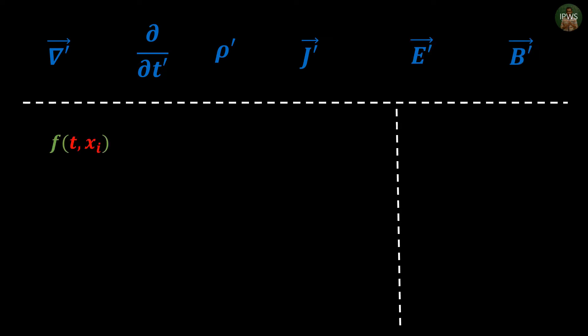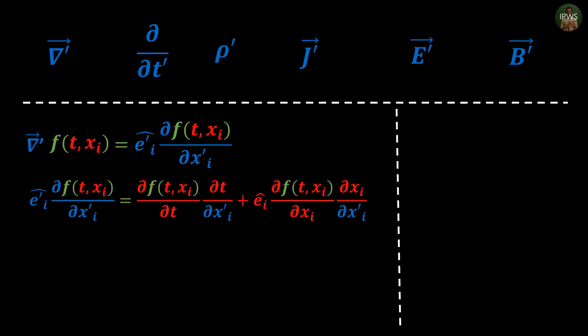We begin by taking our function f in unprimed coordinate and take derivative del'. We can expand gradient in component form where ei' will be unit vector along the i-th axis. Since f is not a function of x' we use chain rule, giving us ∂f/∂t with respect to ∂x' and ∂f/∂x with respect to ∂x'. We use the fact that time remains invariant, so t' = t, make derivative on both sides.